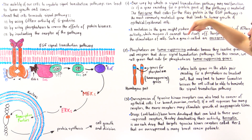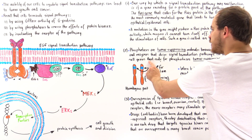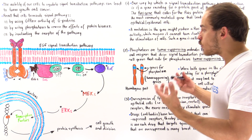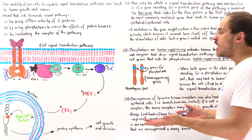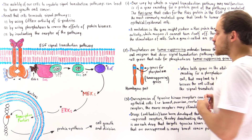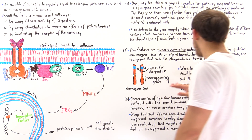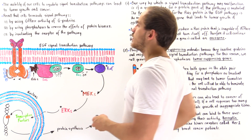Phosphatases are called tumor suppressing molecules because they inactivate proteins and enzymes that drive the signal transduction pathway, and for this reason the genes that code for phosphatases are called tumor suppressor genes. However, if both of these genes are for some reason inactivated, mutated, or blocked — due to some type of chromosomal abnormality such as a deletion, insertion, or translocation to another chromosome — then the cell will not be able to correctly terminate the process using phosphatases, and that may lead to tumor formation.